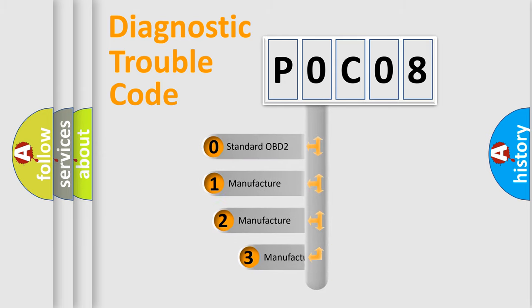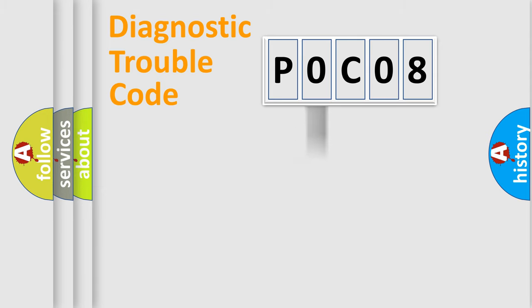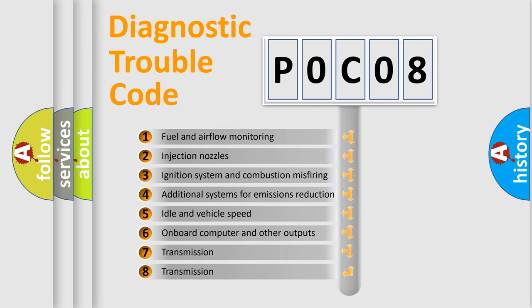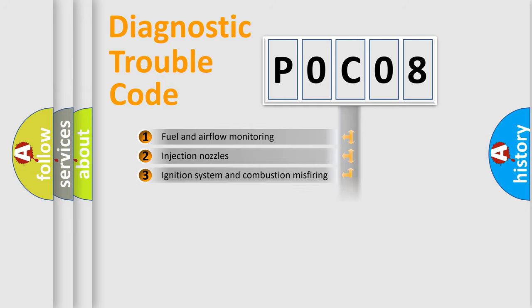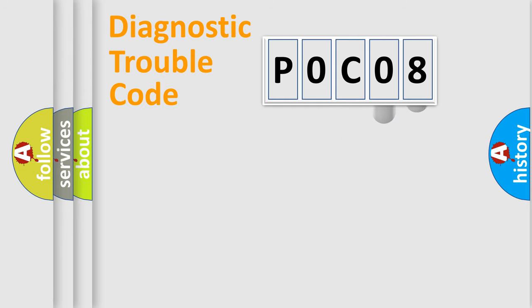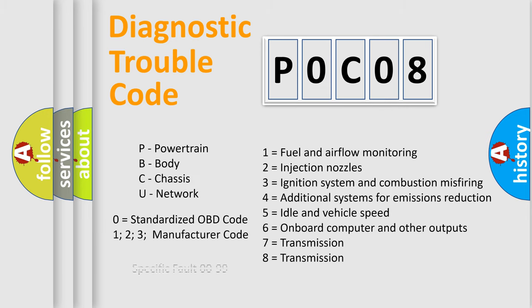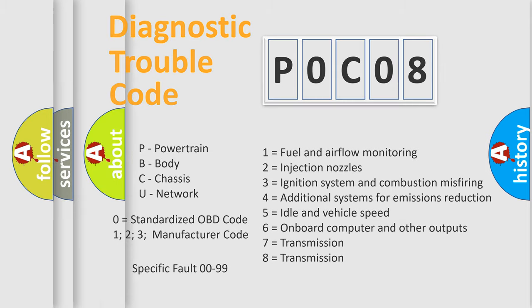If the second character is expressed as zero, it is a standardized error. In the case of numbers 1, 2, or 3, it is a more specific expression of a car-specific error. The third character specifies a subset of errors. This division is valid only for the standardized DTC code, and only the last two characters define the specific fault of the group. Such a division is valid only if the second character is expressed by the number zero.